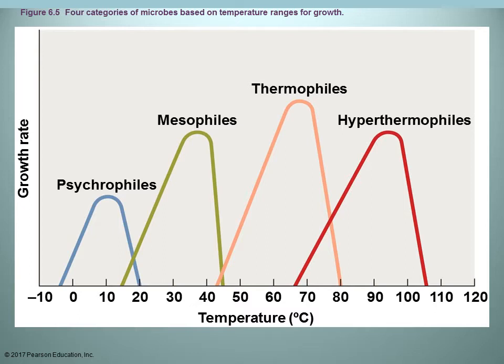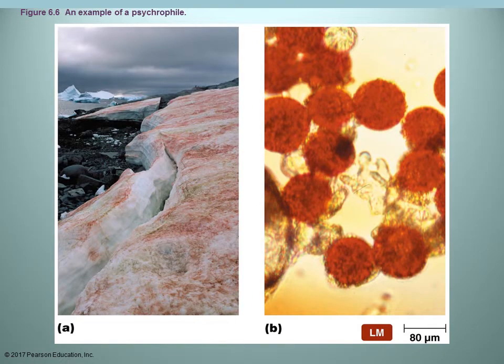We categorize microorganisms by their temperature range for growth. Most in a medical context are mesophiles, with an optimum around body temperature — those are the ones you'll encounter most in healthcare. Psychrophiles survive at much colder temperatures, with an optimum around 10°C (a refrigerator is usually set around 4°C). Thermophiles survive at higher temperatures, and hyperthermophiles at very extreme temperatures — water boils at 100°C, and thermophiles are found in places like hot springs.